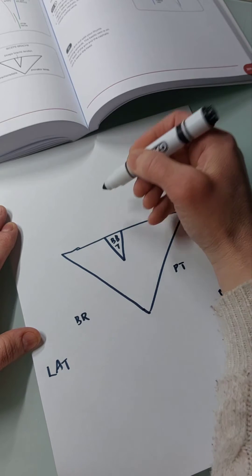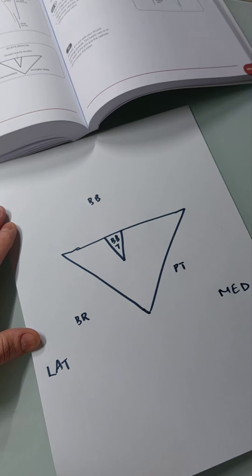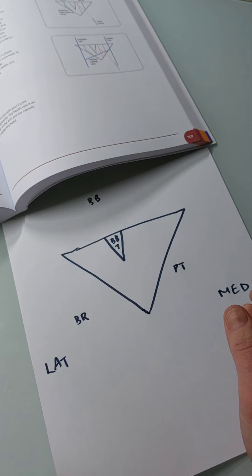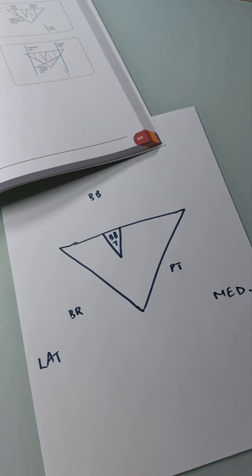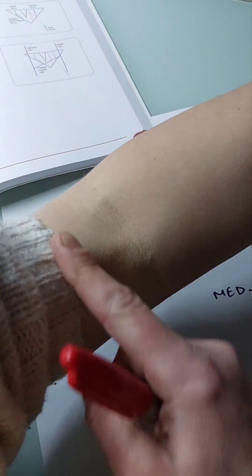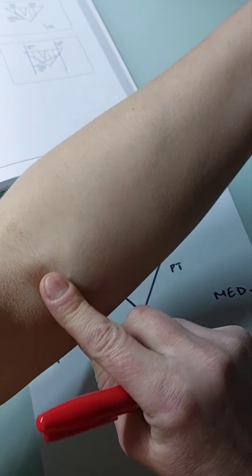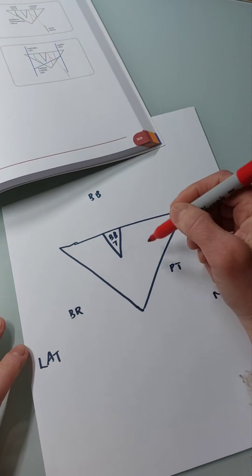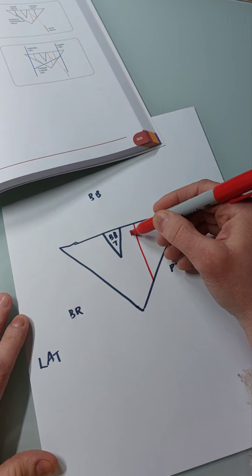When you're trying to cannulate an artery in the arm, you can bend your arm, feel the tendon, and then put your finger medial straight in your arm and you'll feel your pulse. That is your brachial artery. Draw that straight down here represented by this line.